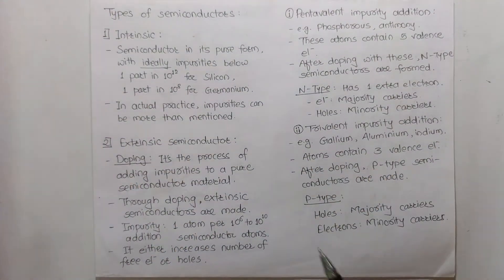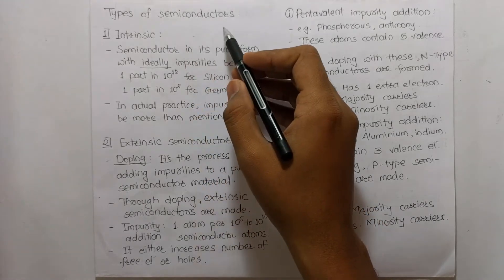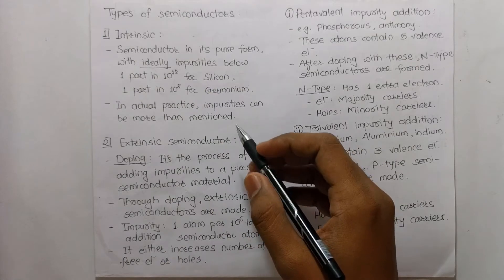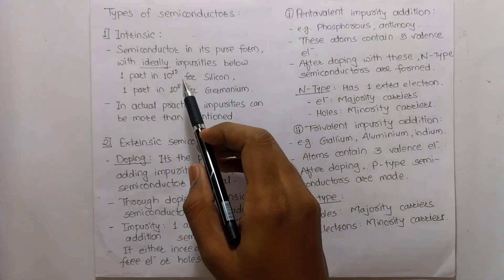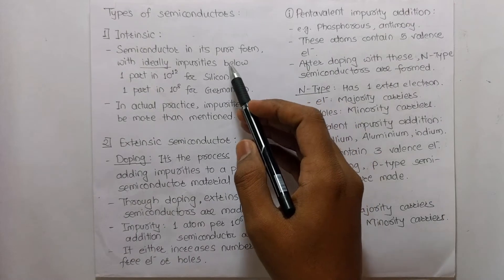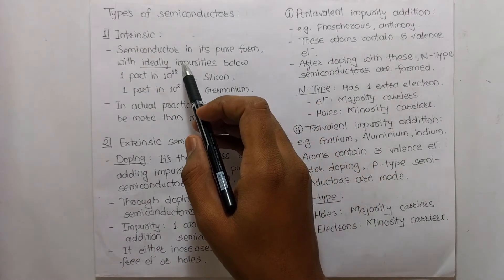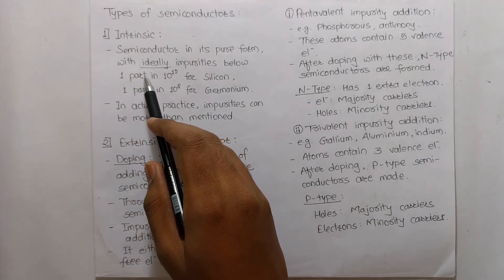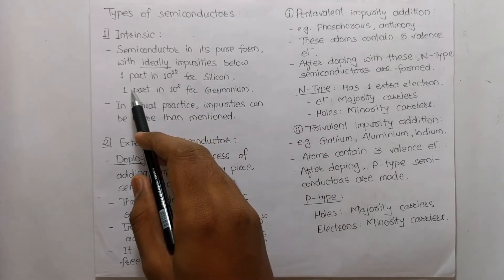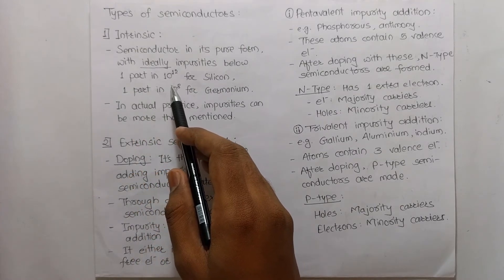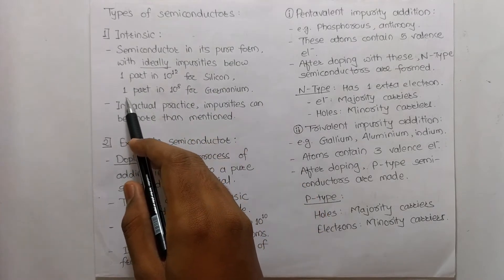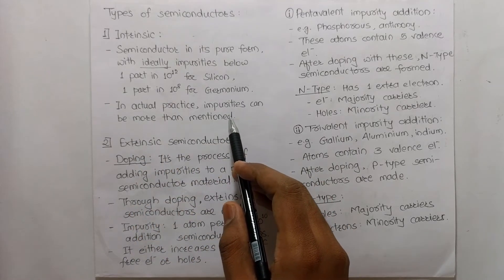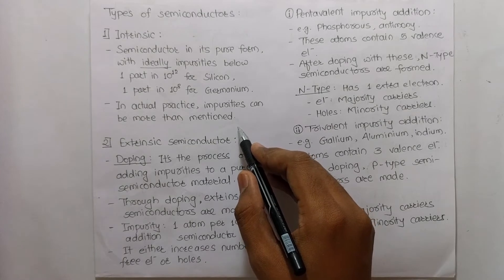Now we will see the types of semiconductors. The first is intrinsic and the second is extrinsic. An intrinsic semiconductor is a semiconductor in its pure form, consisting of ideally impurities below 1 part in 10 raised to 12 for silicon and 1 part in 10 raised to 8 for germanium, though in actual practice impurities can be more than these values.